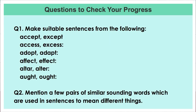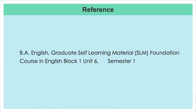This brings us to the questions to check your progress. Question number one: make suitable sentences from the following — accept/except, access/excess, adopt/adapt, affect/effect, alter/alter, opt/ought. Question number two: mention a few pairs of similar sounding words used in sentences to mean different things — this could be from your day-to-day life or your own experiences with the language, spoken or written. For reference, please go through the English graduate self-learning material for a better understanding of this topic. Thank you, dear learner.